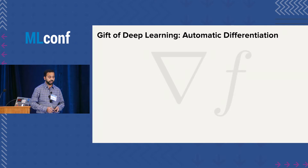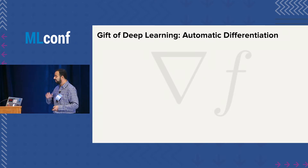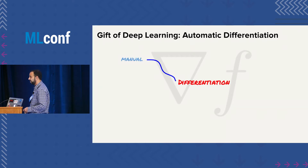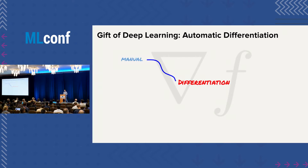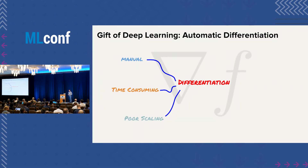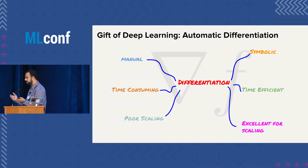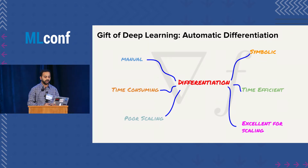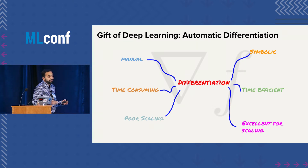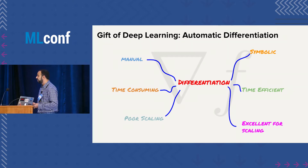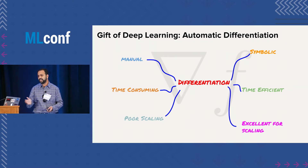Then came deep learning in 2016. In my opinion, the largest gift that the deep learning revolution has given to us is automatic differentiation. Back when we were working with topic models, the derivatives of the loss with respect to parameters were computed manually — time consuming and poor to scale. With the deep learning toolkits such as TensorFlow, PyTorch, and Keras, automatic differentiation is built in, meaning gradients are time efficient and excellent for scaling.